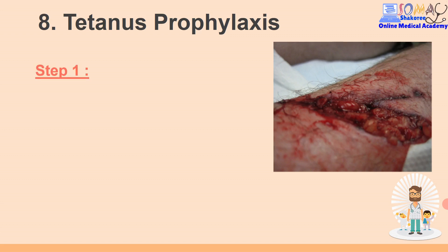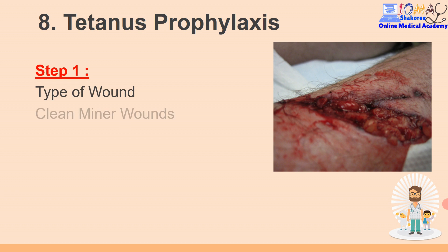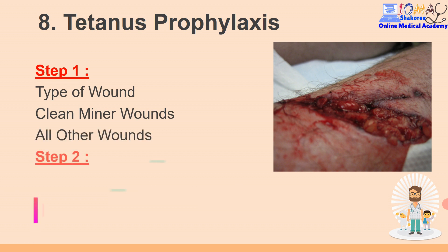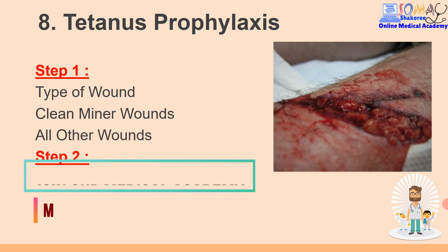Tetanus prophylaxis - we have three steps. Step one: you have to know the type of wound, whether this type is clean or dirty. I would say clean and dirty wound.